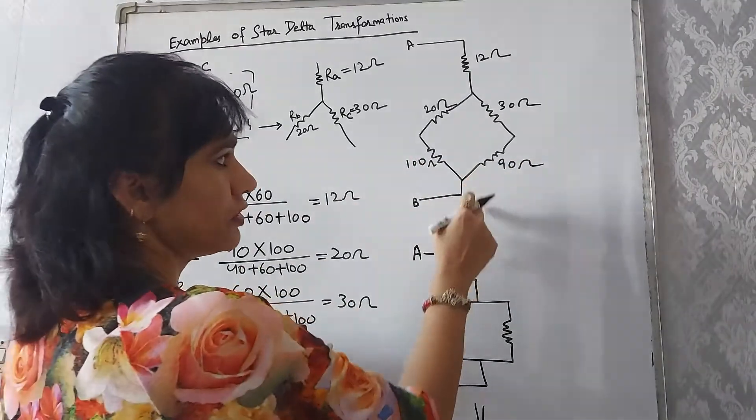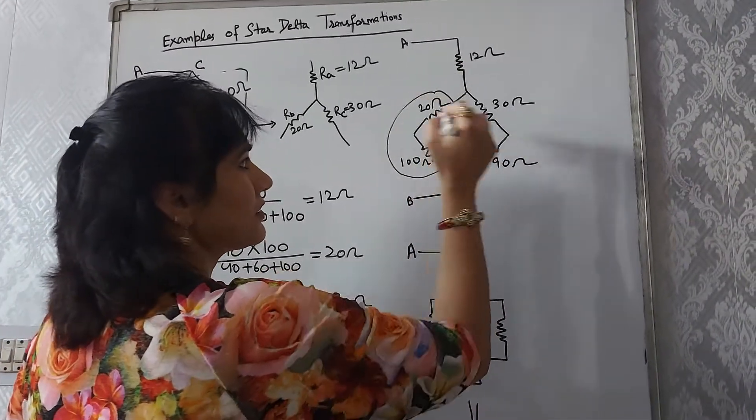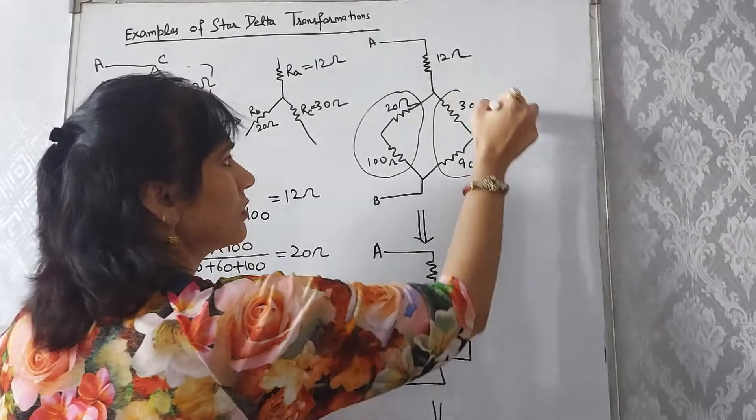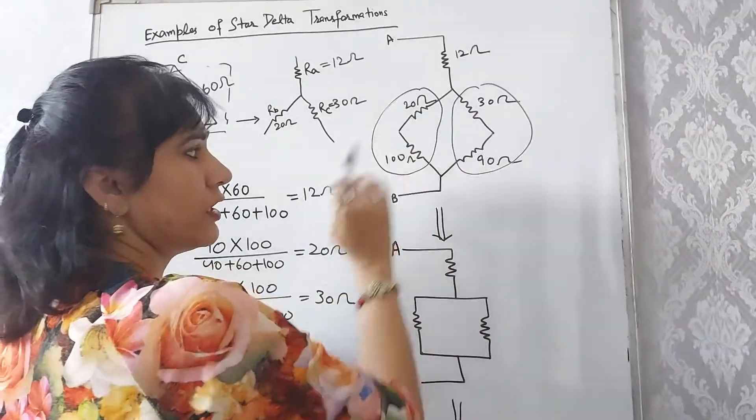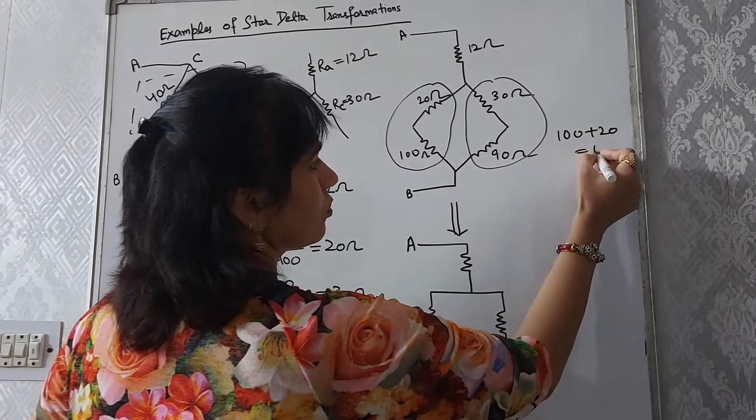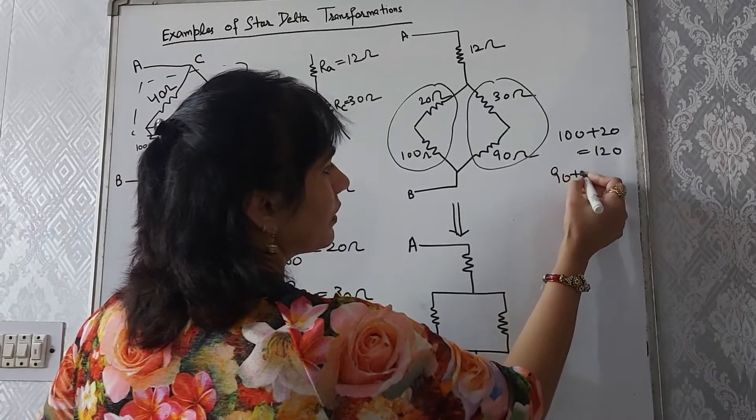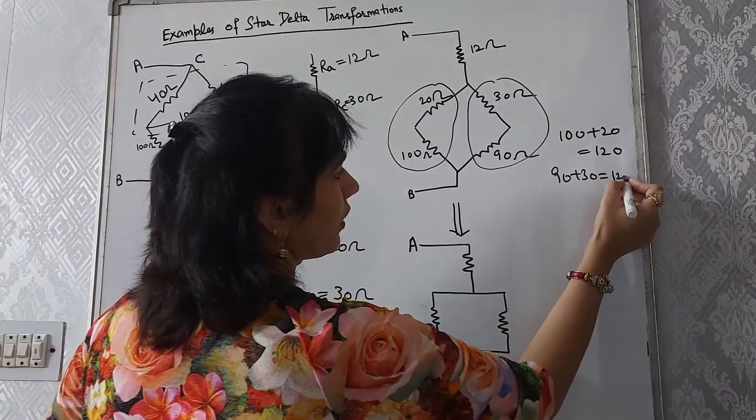Now, if we look into this circuit, these two resistances are in series with each other. We can do the addition: 100 plus 20 is equals to 120, and here 90 plus 30 is equals to 120.